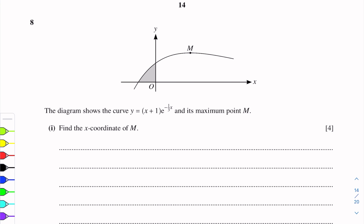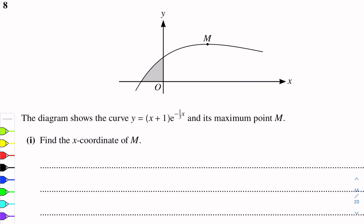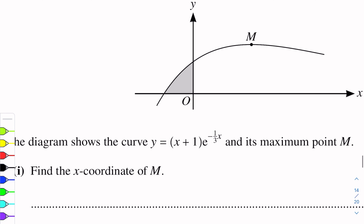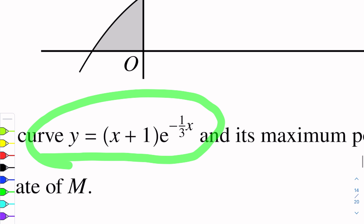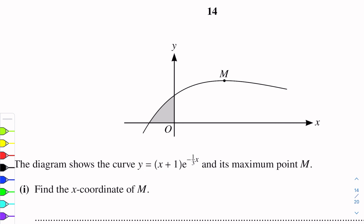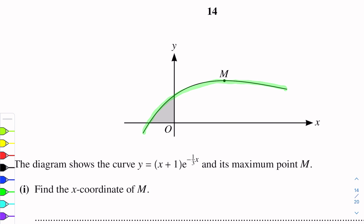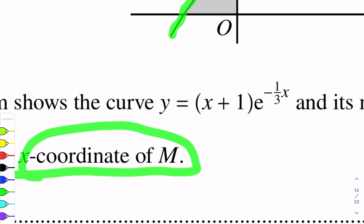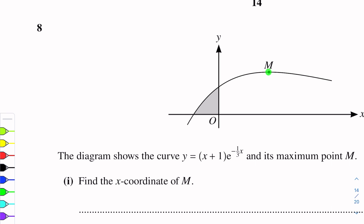Question number 8. This question is of differentiation. The diagram shows the curve y equals (x+1) into e^(-1/3 x). This is the equation of the curve drawn on the x-axis and y-axis. This equation represents this curve and its maximum point is M. Find the x-coordinate of M, which is the maximum point.